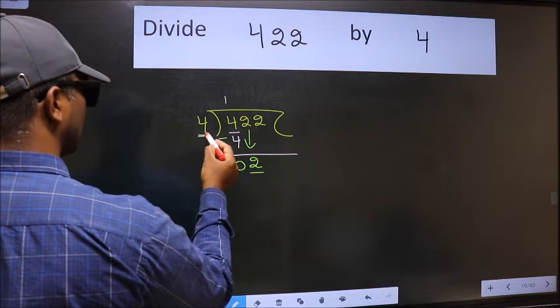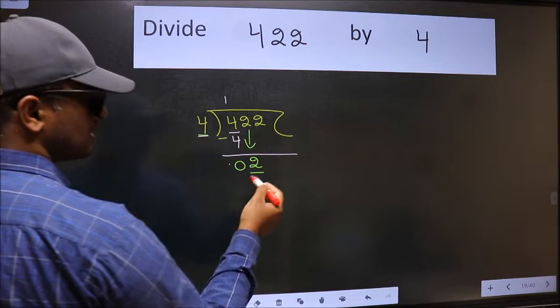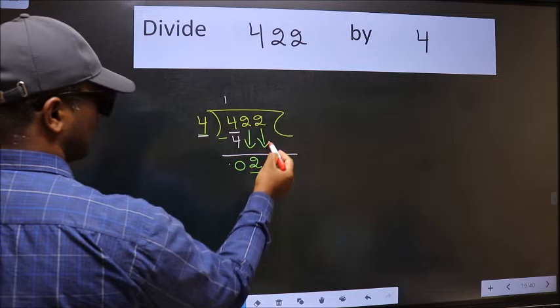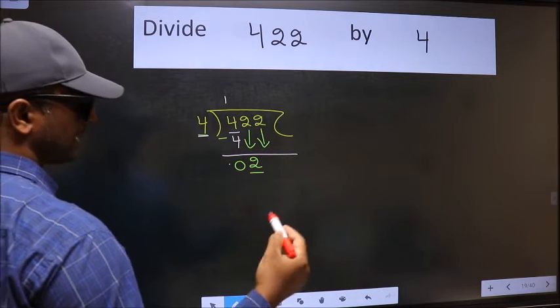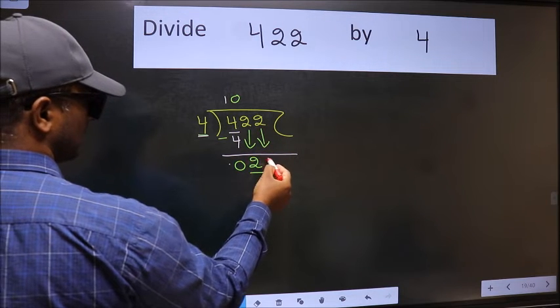Now here we have 2 and here 4. 2 is smaller than 4, so we should bring down the second number. The rule is we should put 0 here, then only we can bring this number down.